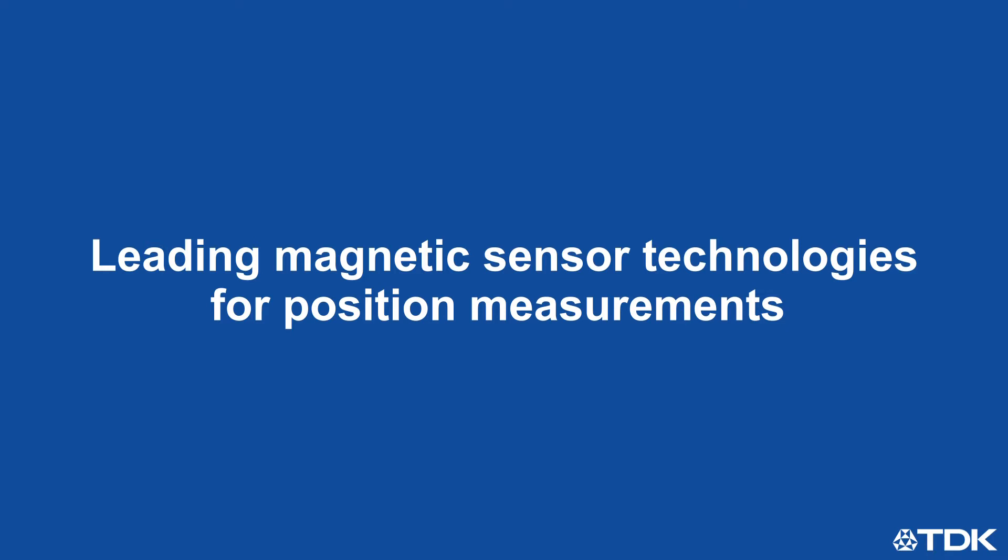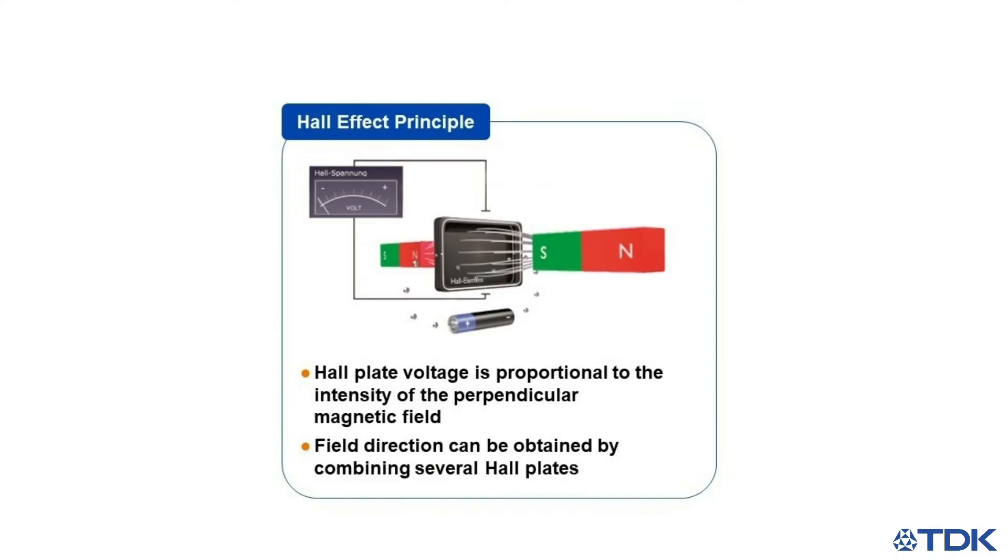TDK offers magnetic field sensors based on the Hall effect for the measurement of current, position, linear or rotational movement. The measuring principle of a Hall sensor is, as the name suggests, based on a physical effect named after Edwin Hall.